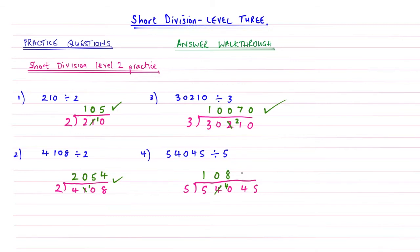5's into 4? Again, it's too big, so none. We strike that through and carry the 4 again. Then 5's into 45 go 9. And so that's practice question number 4 thoroughly explained for you.